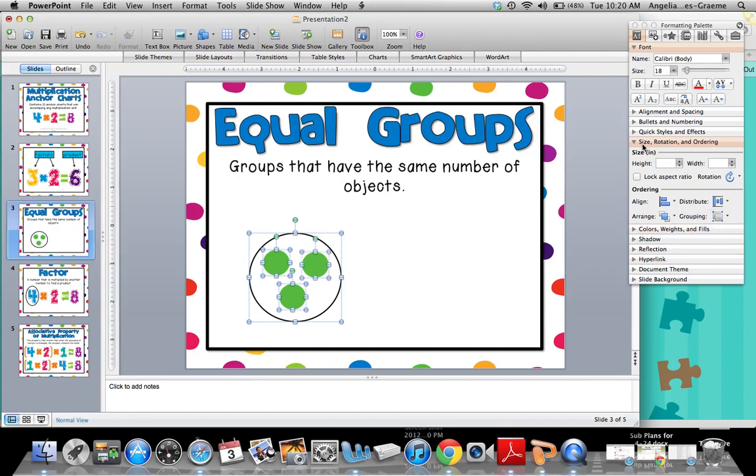Then I'll go to Size, Rotation, and Ordering, click Grouping, and hit the Group key. Now I can move it all as one object, so I'll copy it and paste it.